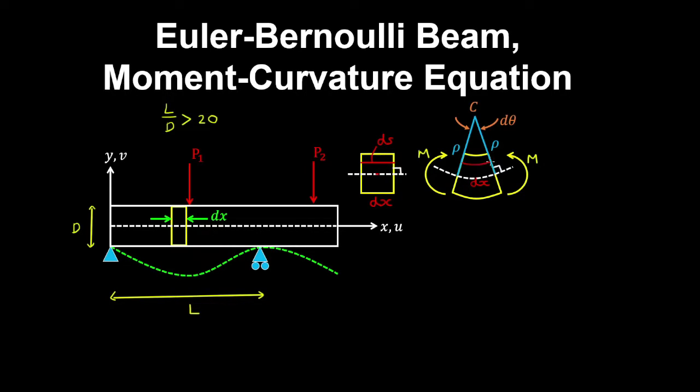The fiber that we looked at, that's at a distance y above the neutral axis, gets compressed in the top and has a deformed length ds'. The distance from the center of curvature for the section to the neutral axis is given by the radius of curvature.